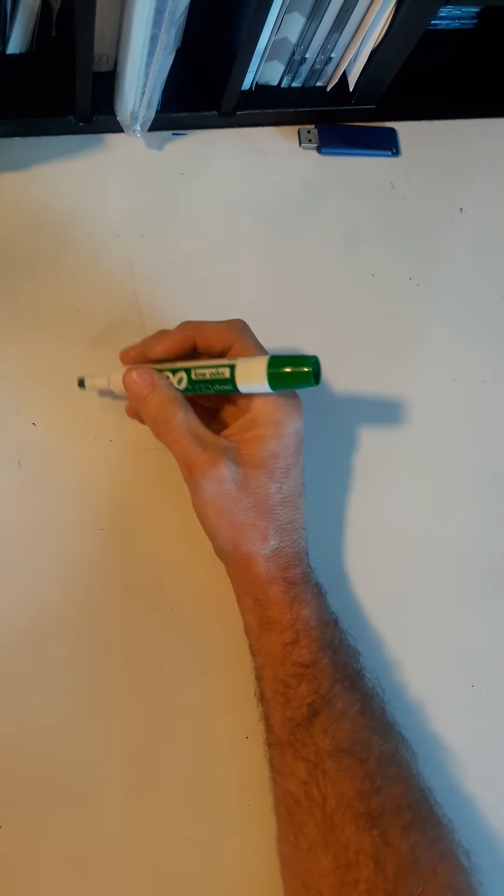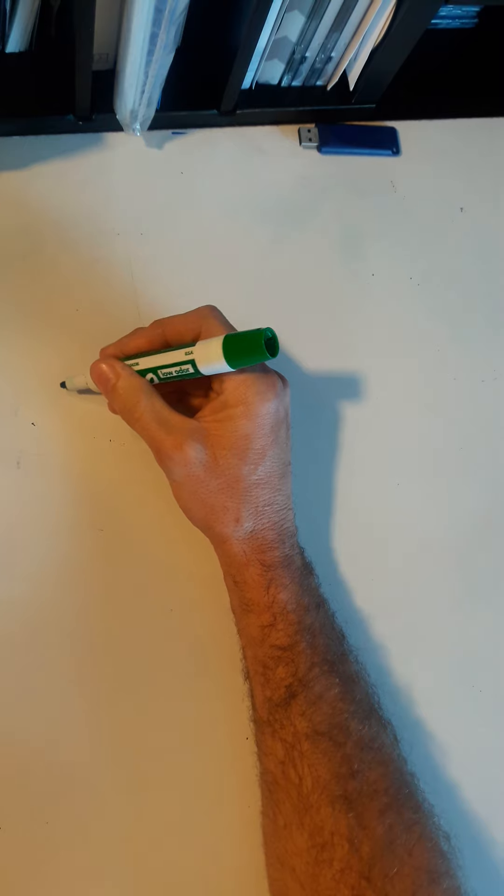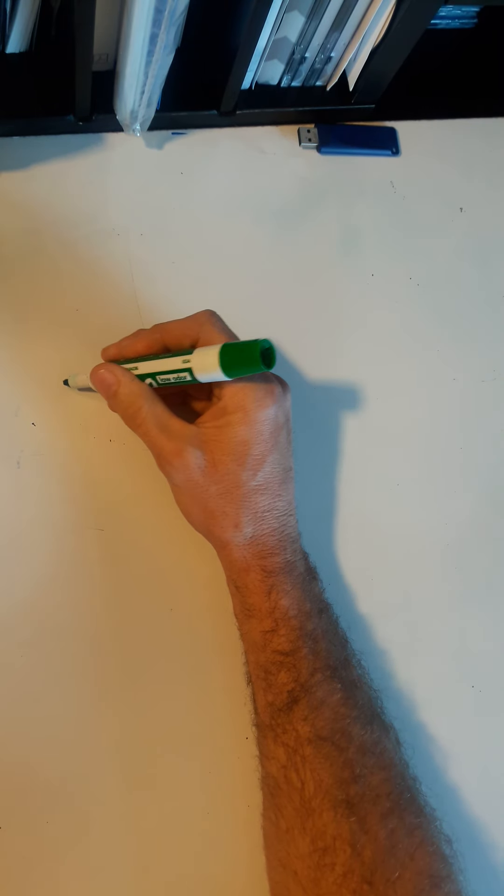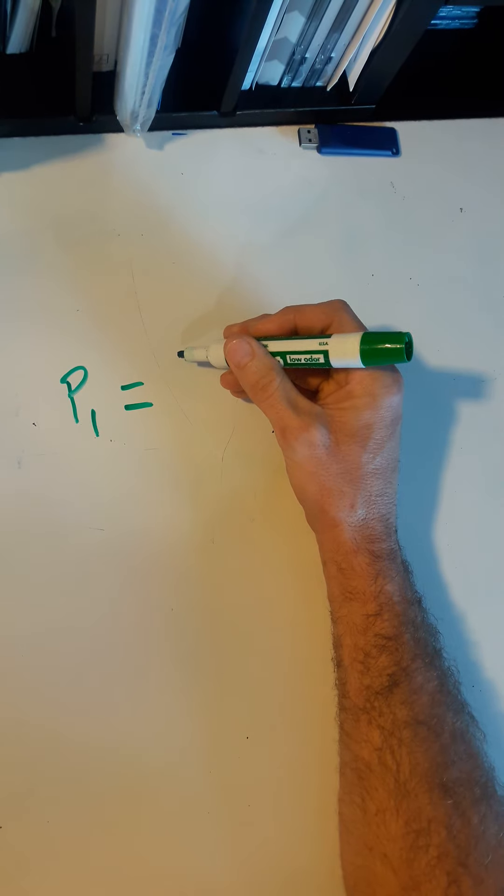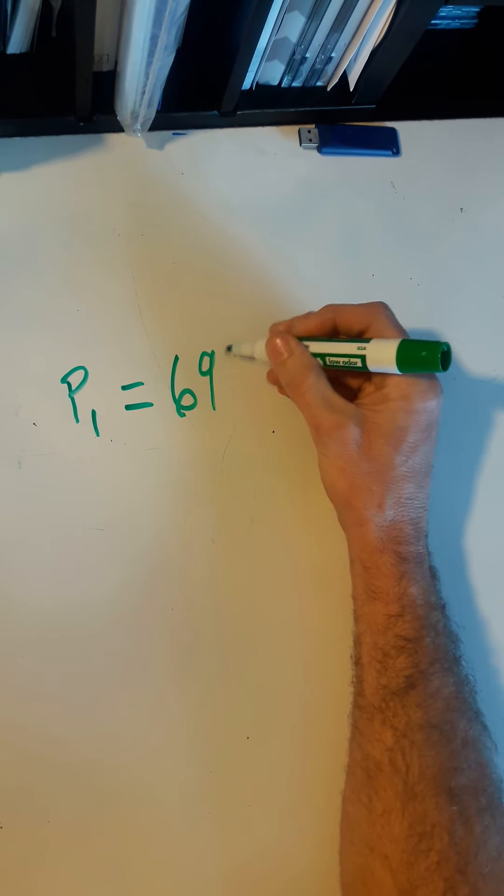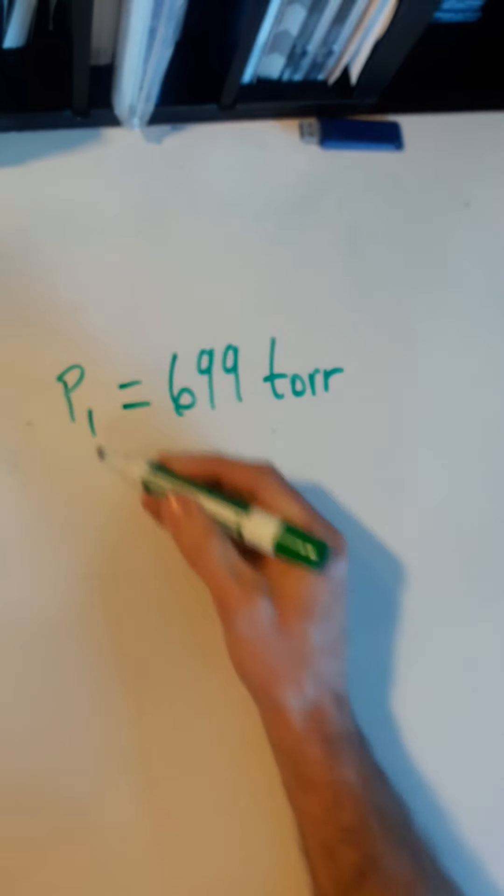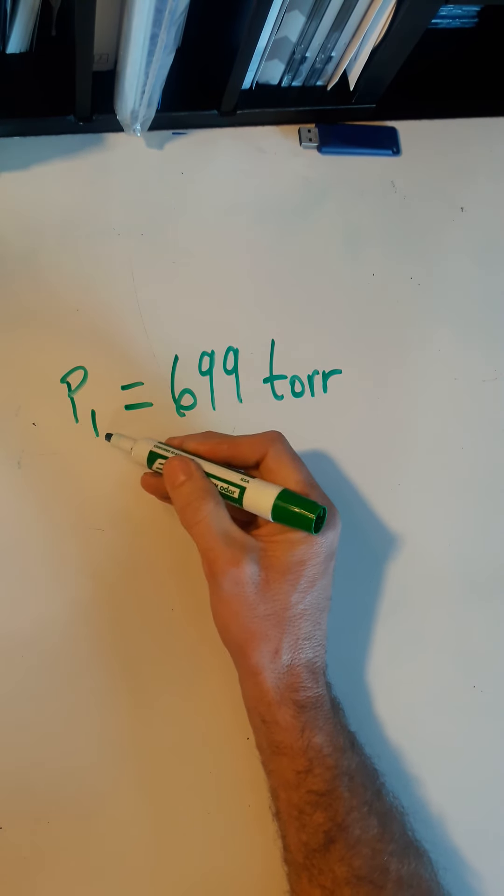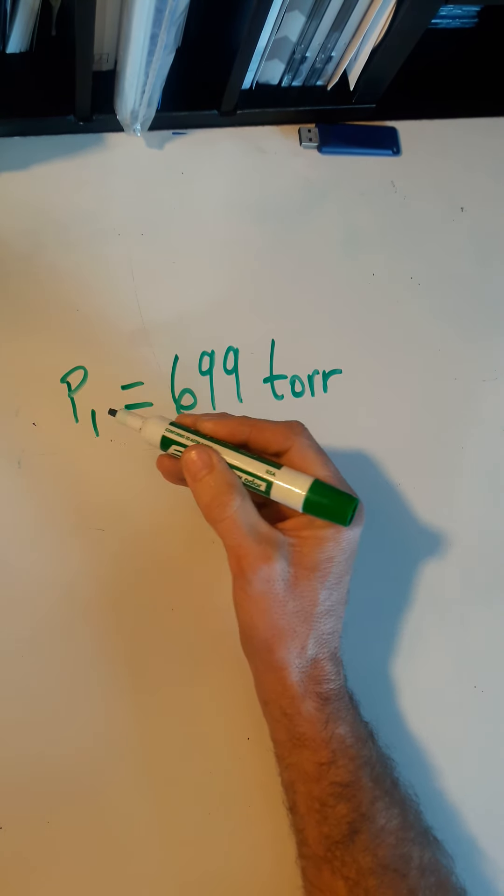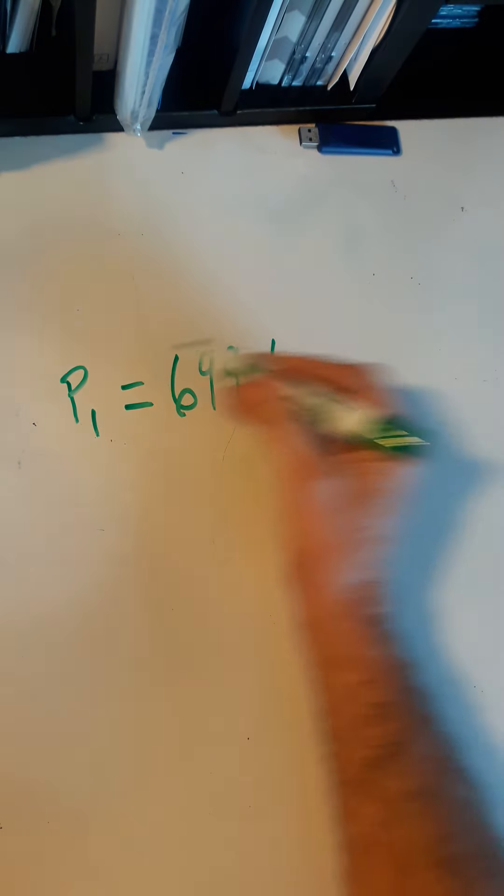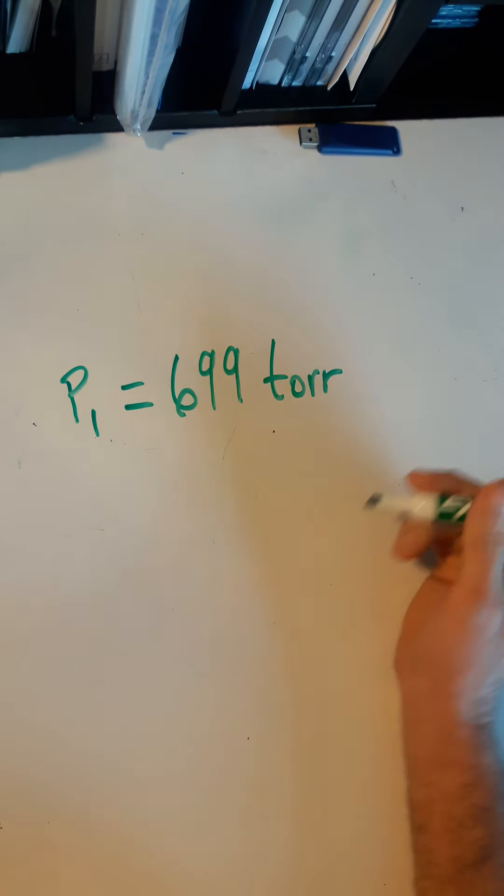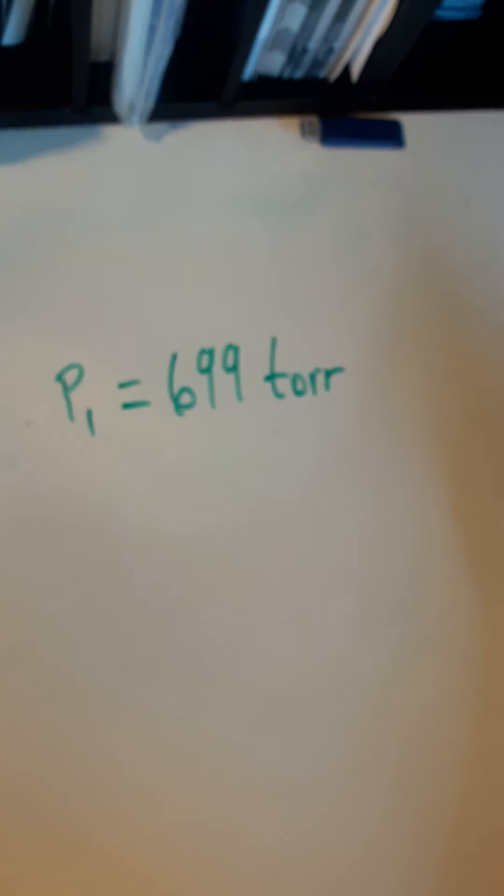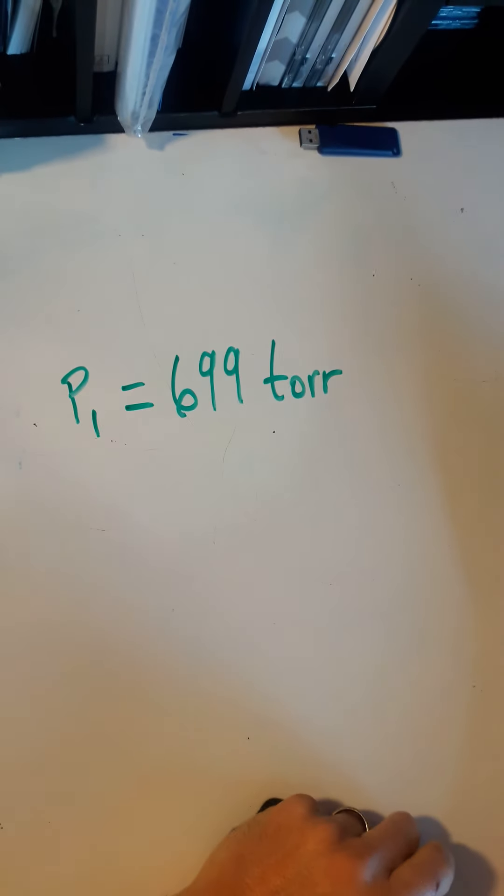So from this problem, what I know is that I can assign my P1 as 699 torr. And it doesn't really matter what you label as P1, P2, V1, V2, as long as you have the correct variables together. In this case, you have P1 being 699 torr.